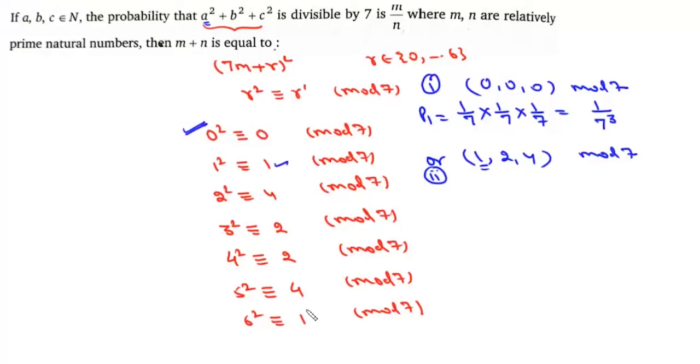Modulo 1 we have 2 cases, so there will be 2/7. Modulo 2 is again 2 cases, so 2/7. And modulo 4 is also 2 cases, so 2/7. For a, b, and c, anyone can have 1, 2, and 4, so we can distribute it in 3 factorial ways.